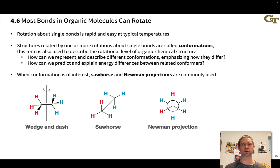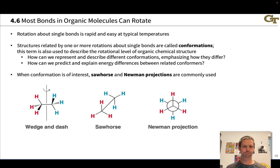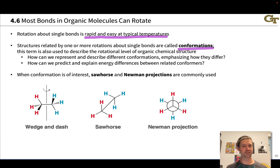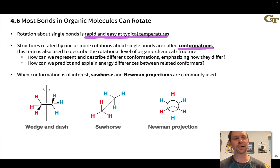At any normal temperature where you would see a reaction, even something like negative 78 degrees Celsius, rotation around a single bond is still going to be very rapid. Structures that are related by rotation about one or more single bonds are known as conformations. And conformations can have different energies, and this is the main reason we're interested in exploring conformation and the energetic dependence of rotation around a single bond.